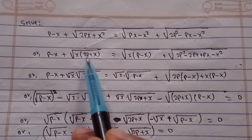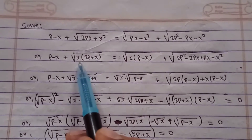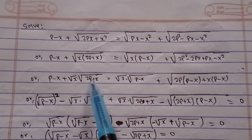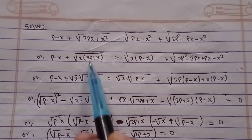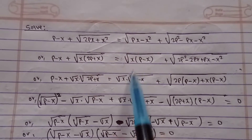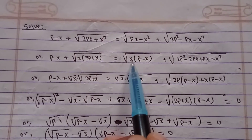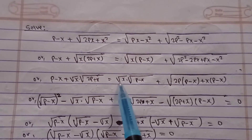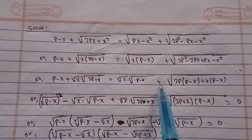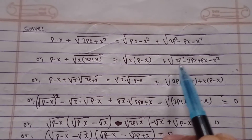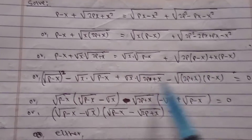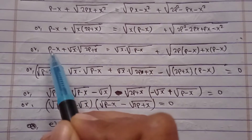In the next step, you can see root X is separated from this term, so it would be easier for us to take common. Here is root X and here is root(2P + X), and similarly in this term, X is separated: root X into root(PX·P minus X). In this term you can simply take 2P and X as common.